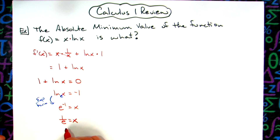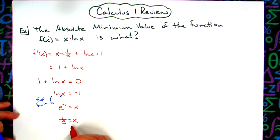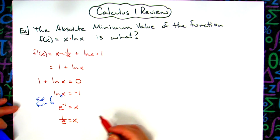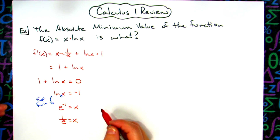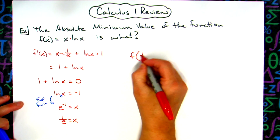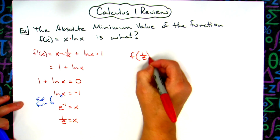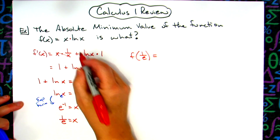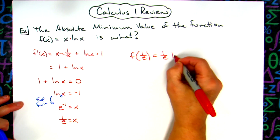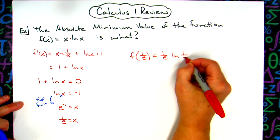So there is the x value at which the minimum value occurs. Now I just need to plug that back into the original function to find the actual minimum value. So I'm going to do f(1/e), which gives me (1/e) · ln(1/e).